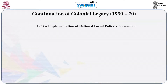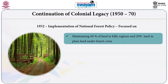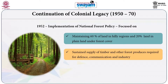Independent India implemented its first National Forest Policy in 1952, which focused on maintaining 60 percent of the land in hilly regions and 20 percent in plain regions under forest cover. The forest policy of 1952 aimed at a sustained supply of timber and other forest products required for industry, defense, and transportation and communication.